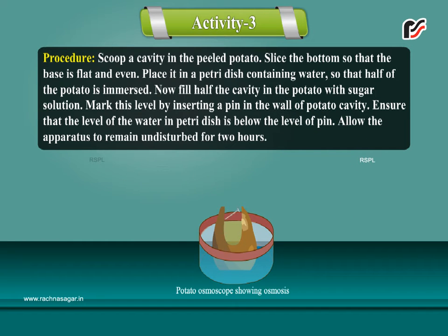Mark this level by inserting a pin in the wall of potato cavity. Ensure that the level of the water in petri dish is below the level of pin. Allow the apparatus to remain undisturbed for 2 hours.